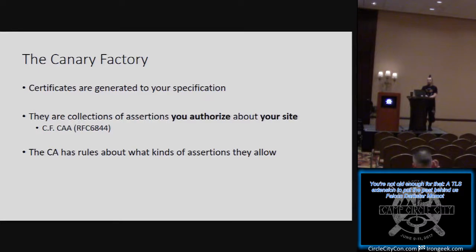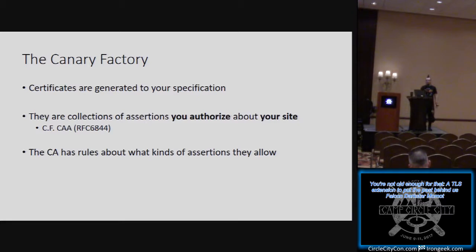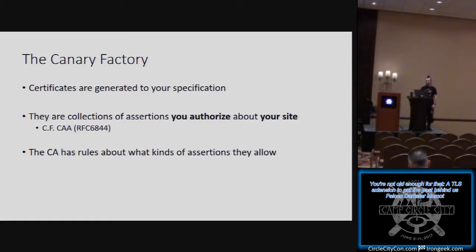I alluded to the CAA extension — Certificate Authority Authorization — it's a new one, mandatory as of a few months ago for certificate authorities to support. It allows the site operator to specify which certificate authorities are allowed to issue certificates for their site, and also potentially your own certificate authority account number so even if you know who the CAA is, you can't easily social engineer them into issuing a certificate for your site. It's optional for website operators but I expect it to become more of a thing in the future. Most CAs will not sign certificates with completely random OIDs they do not understand, and will not issue certificates that have odd types of extensions.